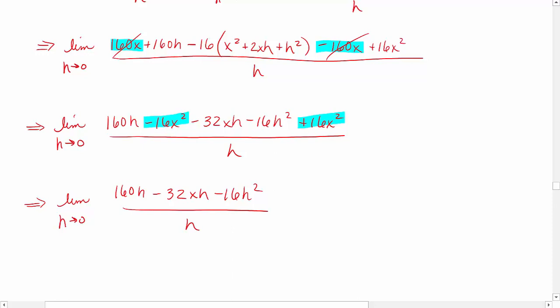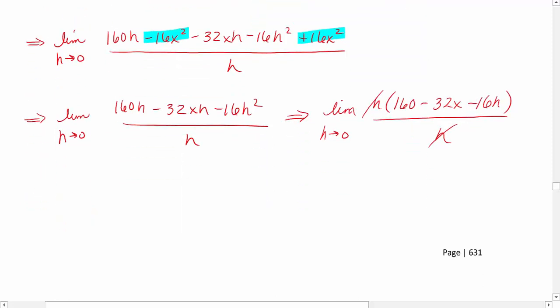We'll factor an h out of the numerator so we can cancel it with the h in the denominator. Once we get rid of that factor of h in the denominator, we'll be able to evaluate the limit by substituting 0 in for h. So it follows then that f'(x) is going to be equal to 160 - 32x.